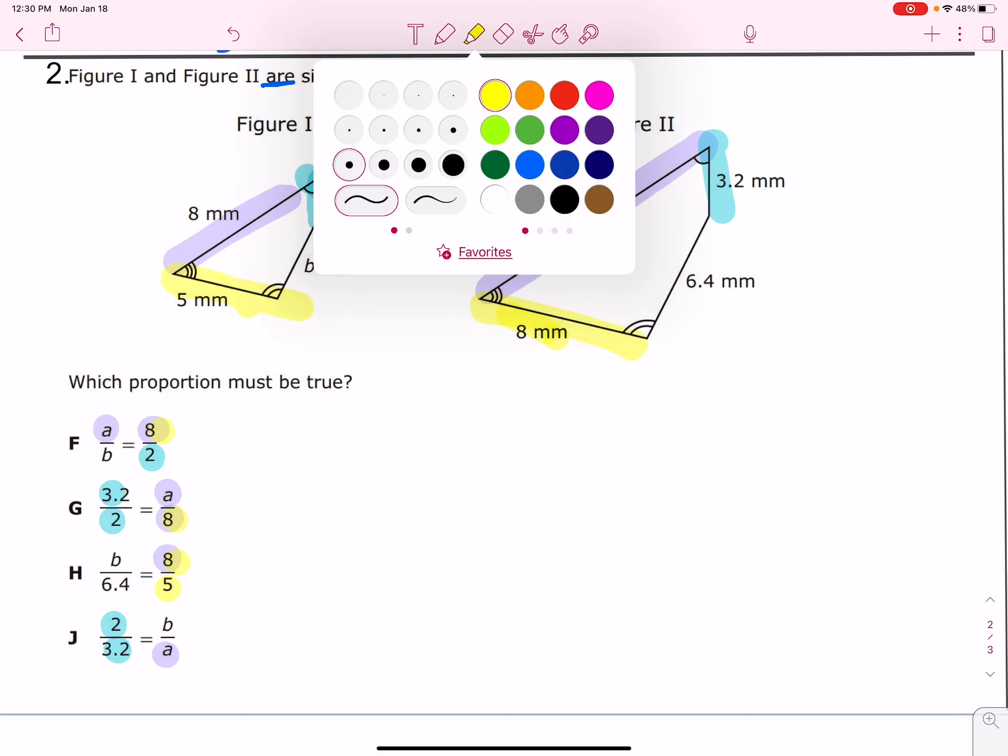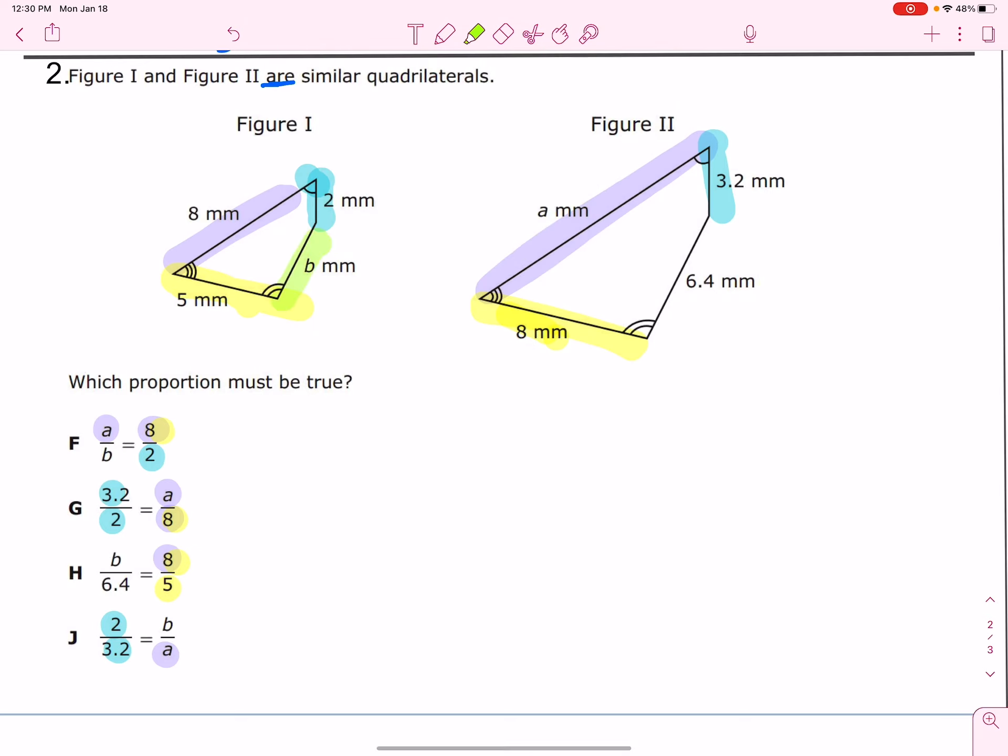And then the only side that's left is B and 6.4. B, B, 6.4, B.